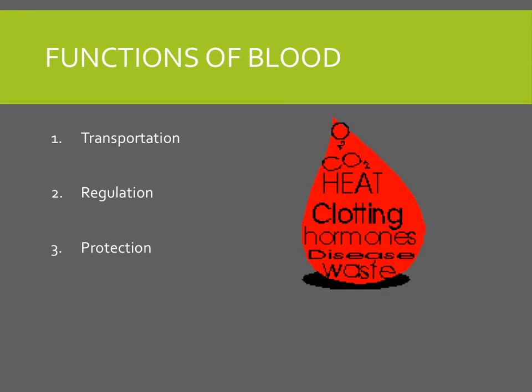One of the functions of blood is transportation. Blood transports oxygen from the lungs to the cells of the body and carbon dioxide from the body cells to the lungs for exhalation. Blood also transports heat and waste products to various organs for elimination. It also carries nutrients, hormones, as well as other important substances throughout the body and to the different tissues.